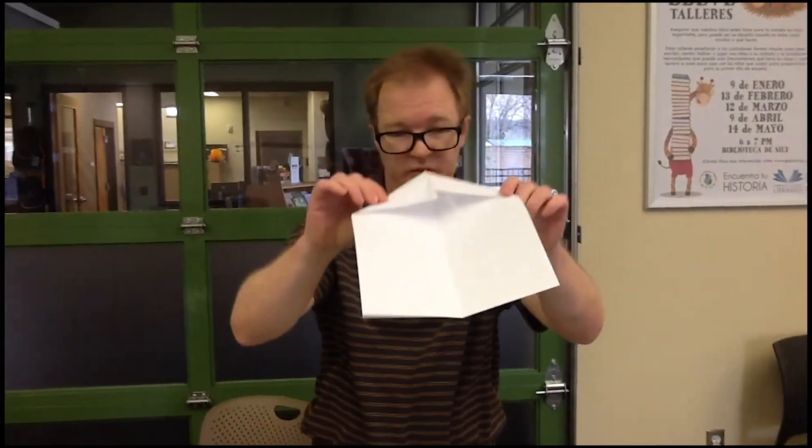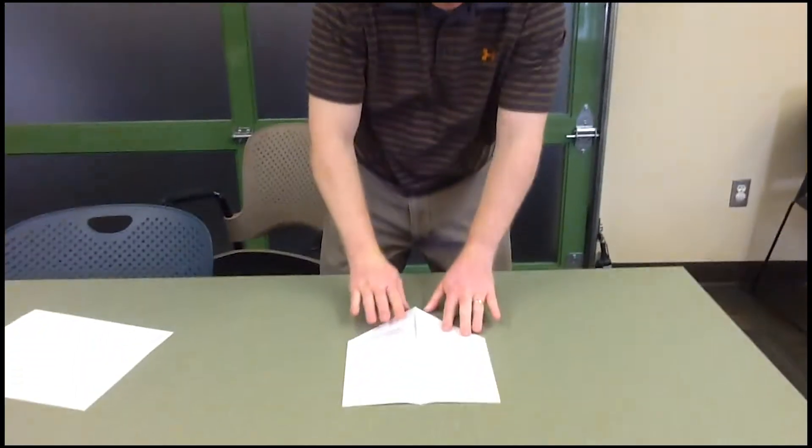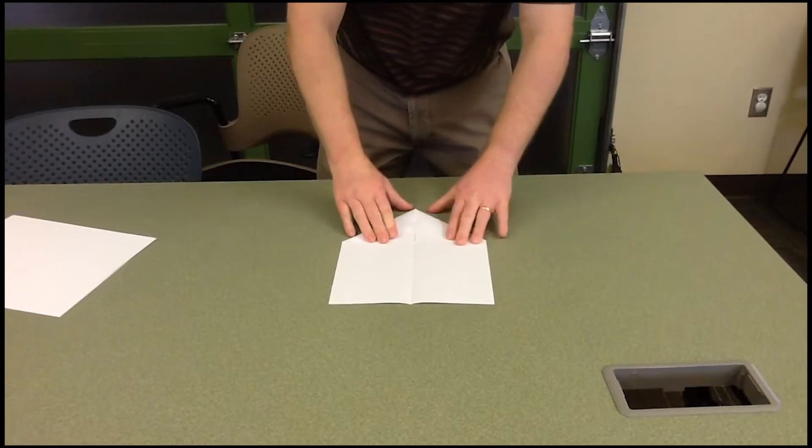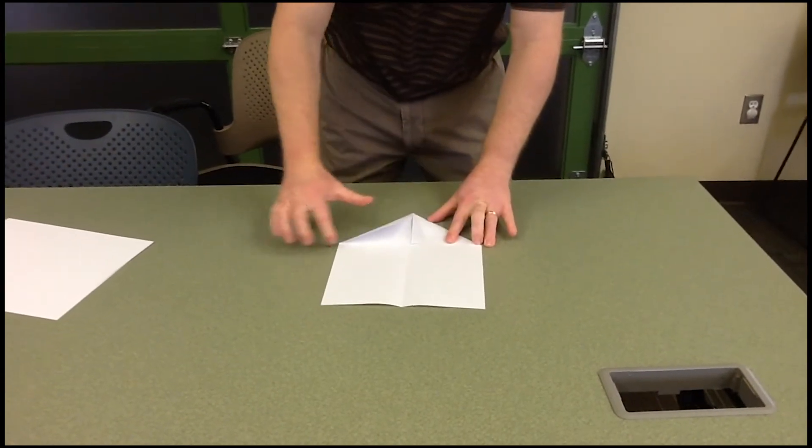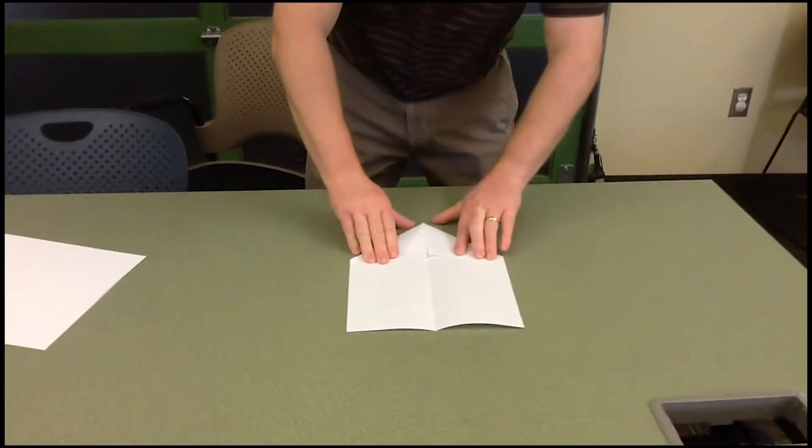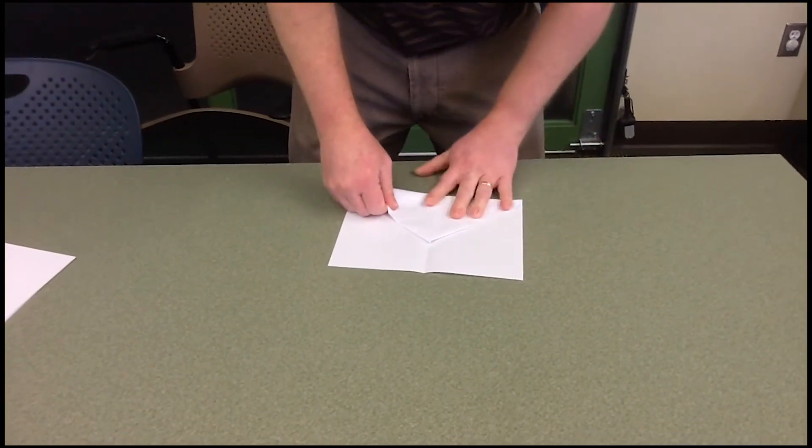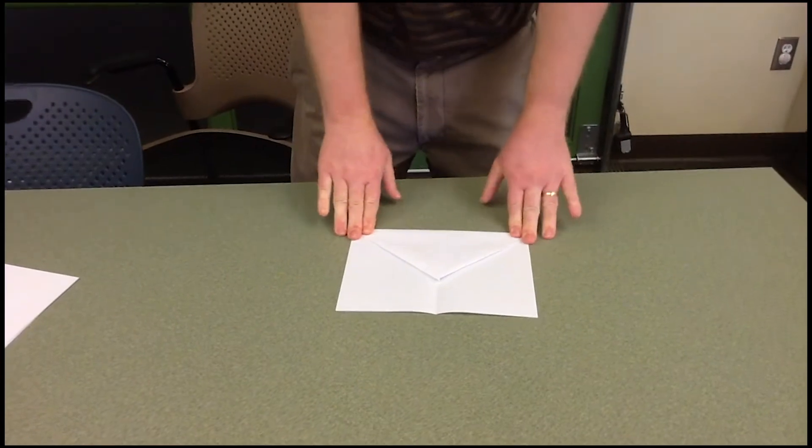Now this is where it becomes different. So, with the arrow pointing towards yourself, you're going to fold along this line here. You're going to fold it down like that.